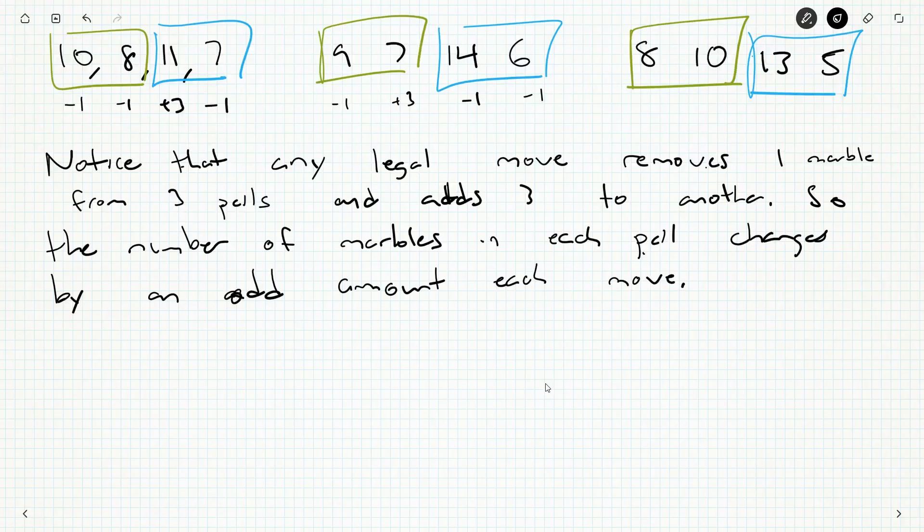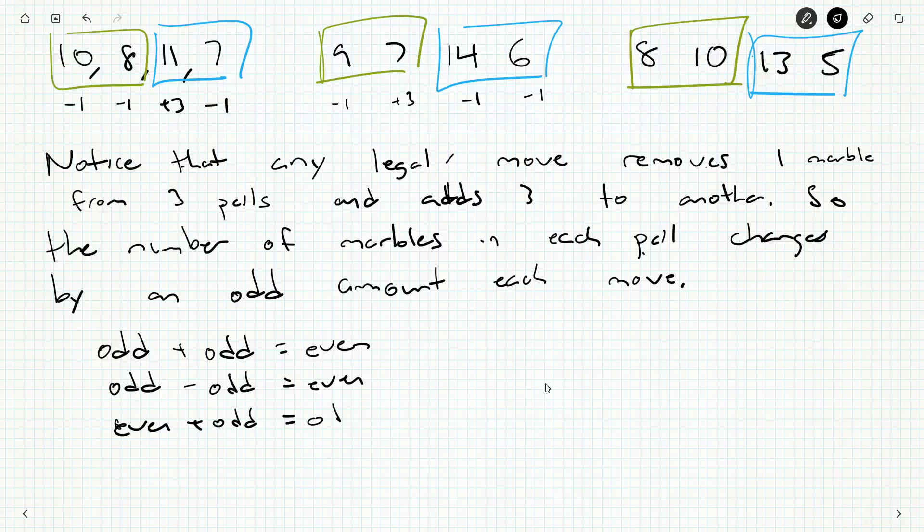Three of them go down by an odd number, and one of them goes up by an odd number. So they change by an odd amount. Well, an odd number, an odd plus an odd is even. An odd minus an odd is even. An even plus an odd amount is odd. An even minus an odd is odd.